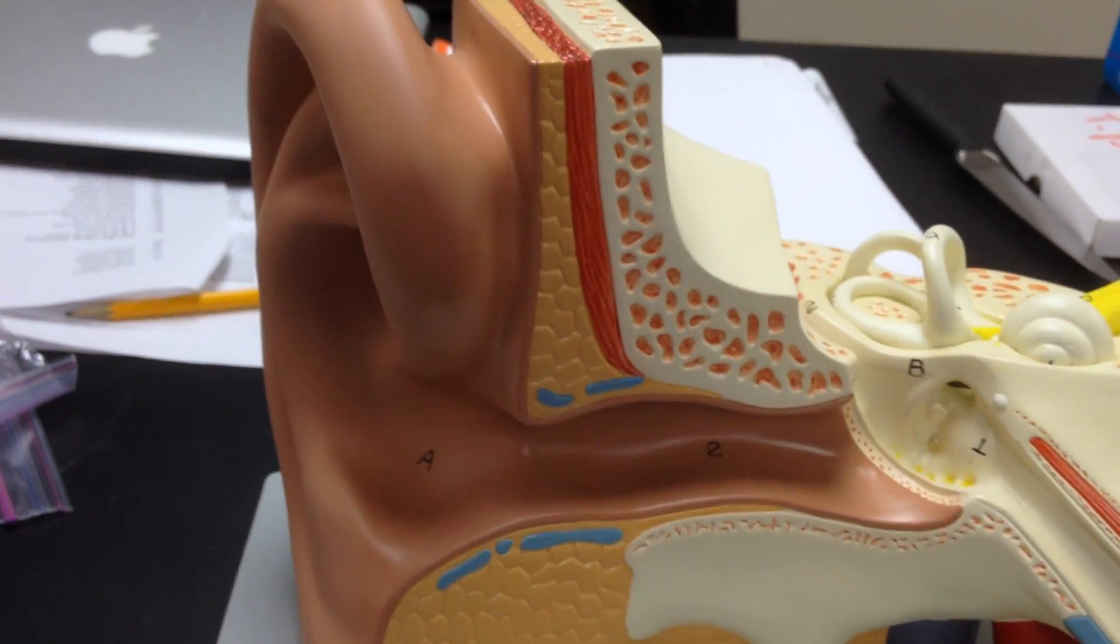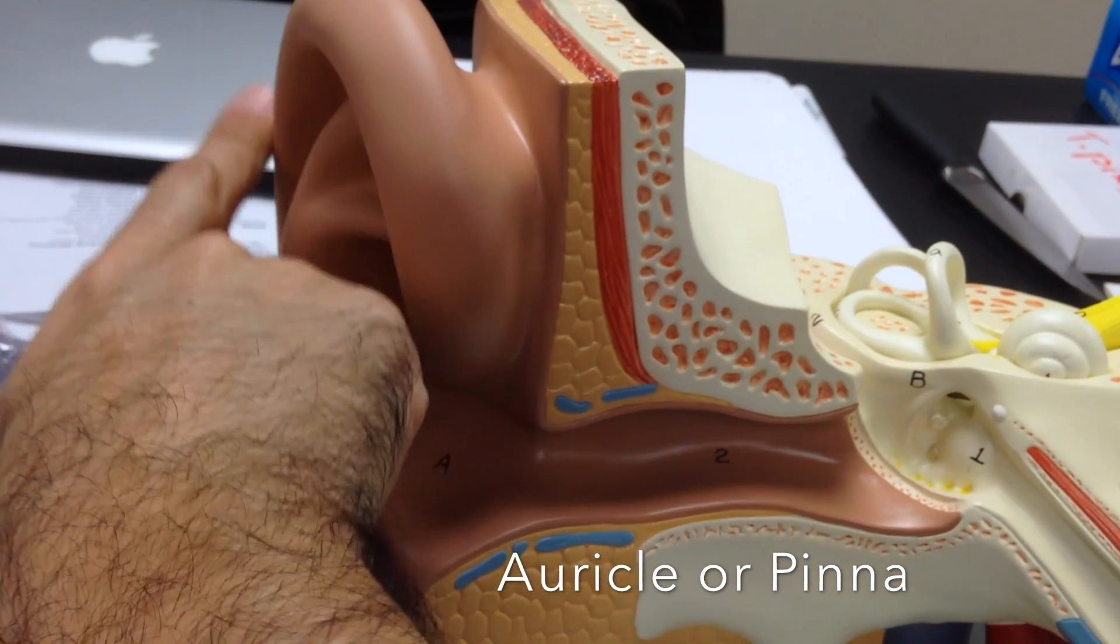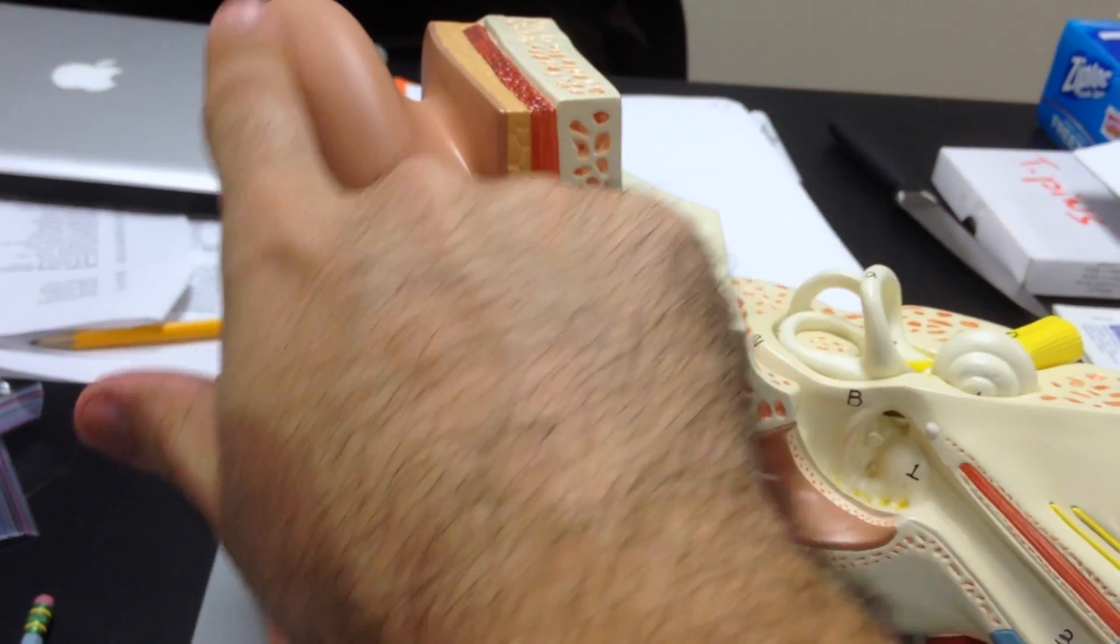This is your hearing apparatus. We start with the auricle, which is this entire region right here, also known as pinna. We normally call this ear, but this is the pinna.